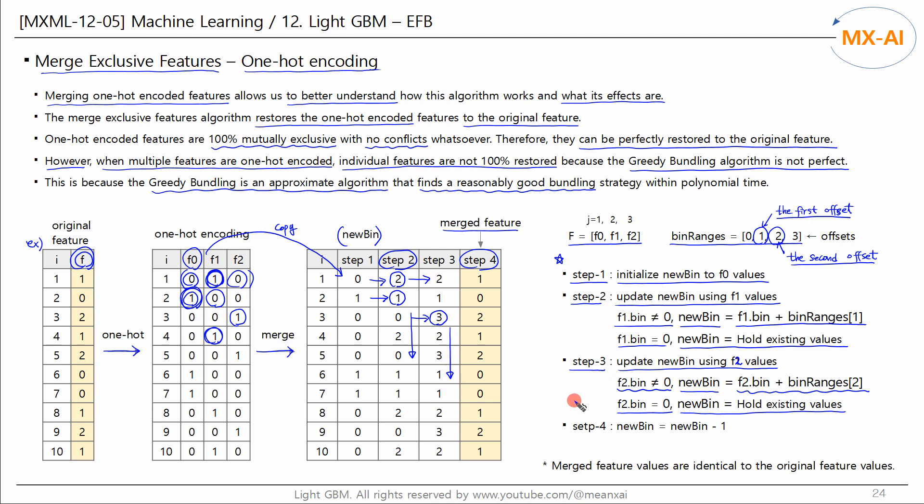This is the merge exclusive features algorithm. Let's add one more step here. Subtracting one from all values of new bin is as follows. This is exactly the same as the original feature. If the greedy bundling algorithm can find the feature list F correctly, the merge exclusive features algorithm can fully restore the one-hot encoded features to the original features.